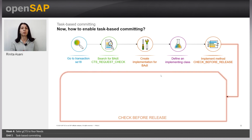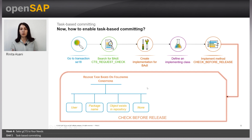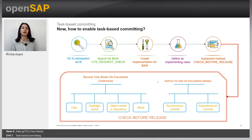In the implementation of Check Before Release, we can customize it based on our scenarios and use cases. For example, we can decide when a task will trigger a commit: you can specify certain users so that when they release a task a commit is created; or specify particular package names; or check whether objects exist in the cloned repository; or simply have no condition at all so that every task release creates a commit. Besides this, you can also enable one of two modes: synchronous commit or asynchronous commit.